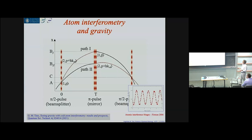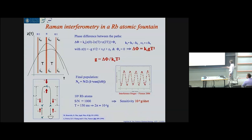The general idea, which we heard already today, is that in an atom interferometer using laser light, you split the atomic wave packet, reflect it, and recombine it, so at the output you get interference fringes. As a function of the gravitational acceleration, this interference pattern acquires a phase. The phase in the presence of an acceleration g is given by k·g·T², where T is the time between pulses — this is for a Ramsey interferometer but is rather general.